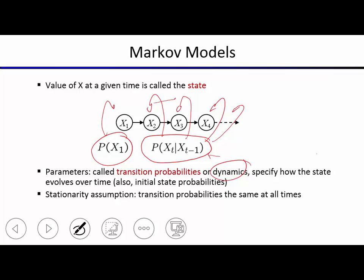The stationarity assumption is that the transition distribution applies to all times t from two onwards — the dynamics is the same at time t as at any other time t-prime. This is the same as the MDP transition model but with no action, so you can think of it as an MDP where there is only one action to choose from.